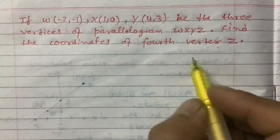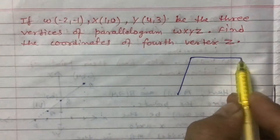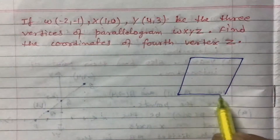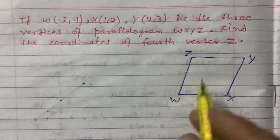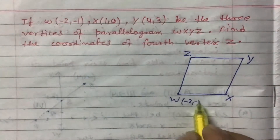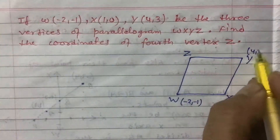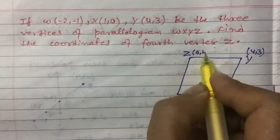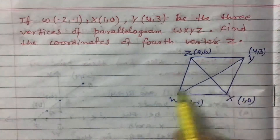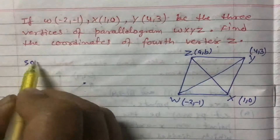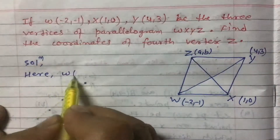To solve this problem, if you draw one figure it will be easy to understand and also easy to find the answer. Let us draw one rough diagram and name it WXYZ. The coordinates of W are (-2, -1), X is (1, 0), Y is (4, 3). Let us say Z is (a, b). We can also draw the diagonals.